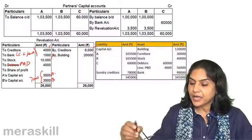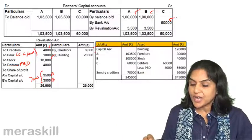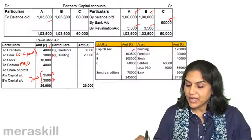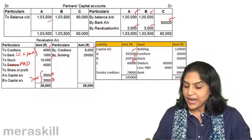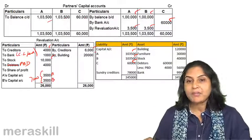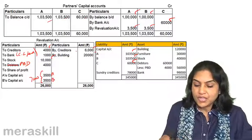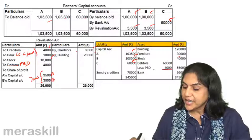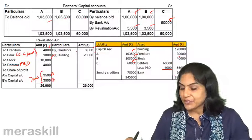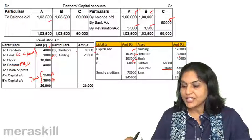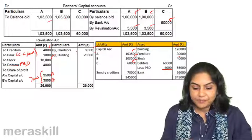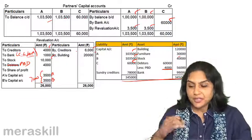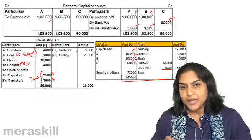In the partner's capital account: 1 lakh each brought down for A and B. C brought in 60,000. Revaluation profit was given to A and B. Therefore the balance in capital accounts is: A 1,03,500, B 1,03,500, and C 60,000. Creditors became 78,000. Building increased in value, furniture is the same, stock 40,000, debtors less provision for doubtful debts is 56,000, bank is 99,000 — 60,000 brought in less 1,000 paid as contingent liability. Total 99,000. This is the final balance sheet after C is admitted and profit on revaluation has been effected.